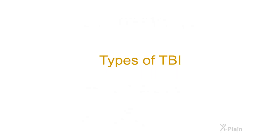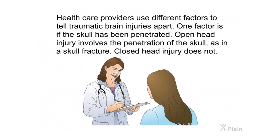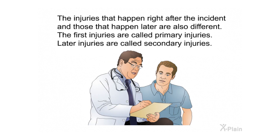Types of TBI. Healthcare providers use different factors to classify traumatic brain injuries. One factor is whether the skull has been penetrated: an open head injury involves penetration of the skull, such as a skull fracture, while a closed head injury does not. The injuries that happen right after the incident are called primary injuries; those that happen later are called secondary injuries.